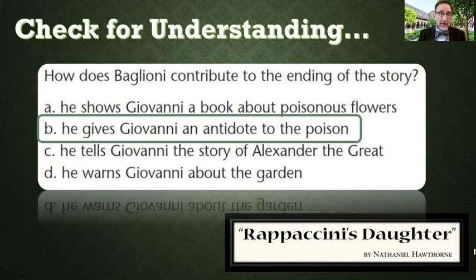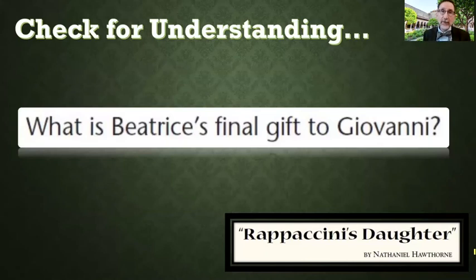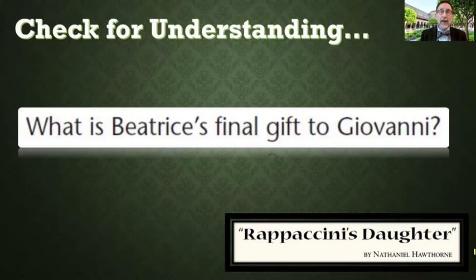Beatrice ends up dying for the one she loves because the one she loves didn't trust her and accused her — she's the only one who can actually feel true love. How does Baglioni contribute to the end of this story? He gives Giovanni an antidote to the poison. He believes Giovanni has been poisoned, makes an antidote, and gives it to Giovanni to take. But by the end of the story, Beatrice drinks it instead, and because she was raised with the poison she can't live without it. Taking the antidote that would have perhaps saved Giovanni ends up killing Beatrice — and that's her final gift to him: a gift of love.